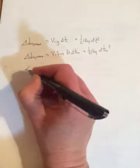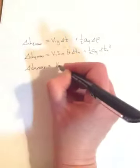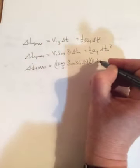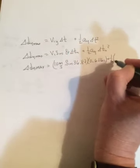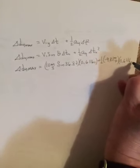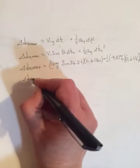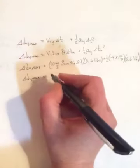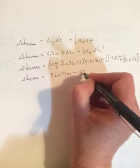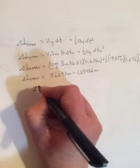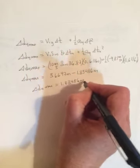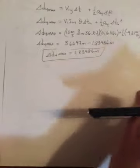So filling in our numbers. 10 meters per second sine of 36.87, and that's going to get multiplied by 0.6116 seconds. Plus 1 half negative 9.81 meters per second squared times 0.6116 seconds squared. So delta DY max equals, when you do this, the first term is 3.6697 meters. And the second term is 1.83486 meters. And you're subtracting them. And when you do that, you get 1.83486 meters. The second term should always be half the first one.